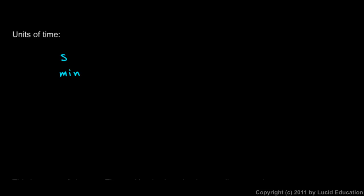We also want to take note of units of time. There are a lot of them — all familiar — but we'll list them with their standard abbreviations. Seconds are abbreviated with a lowercase s, minutes as min, and hours as h (sometimes hr). Days doesn't really have an abbreviation since the word is so short. A week is written as wk, and a month is abbreviated mo. There are also years, centuries (100 years), and millennia (1,000 years). These units are the same whether we're dealing with the English system or the metric system.